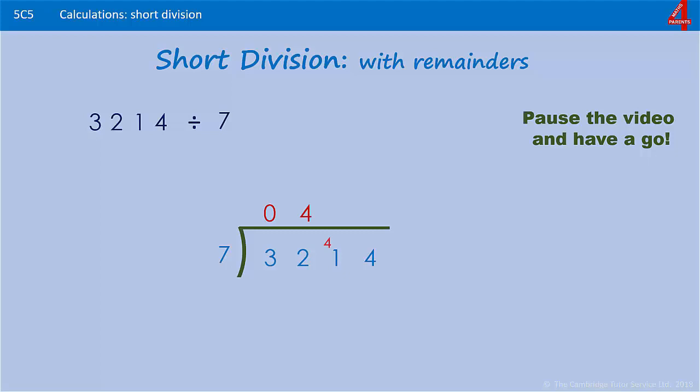7 will go into 42 six times, but we only have 41 here, so we have to look at 5 times 7, which is 35. So we can get 5 lots of 7 into 41 and that leaves us with 6. Now you need knowledge of your 7 and 9 times table. 7 times 9 is 63, so we can get 9 lots of 7 into 64 and there's one left over. 3214 divided by 7 is 459 remainder 1.